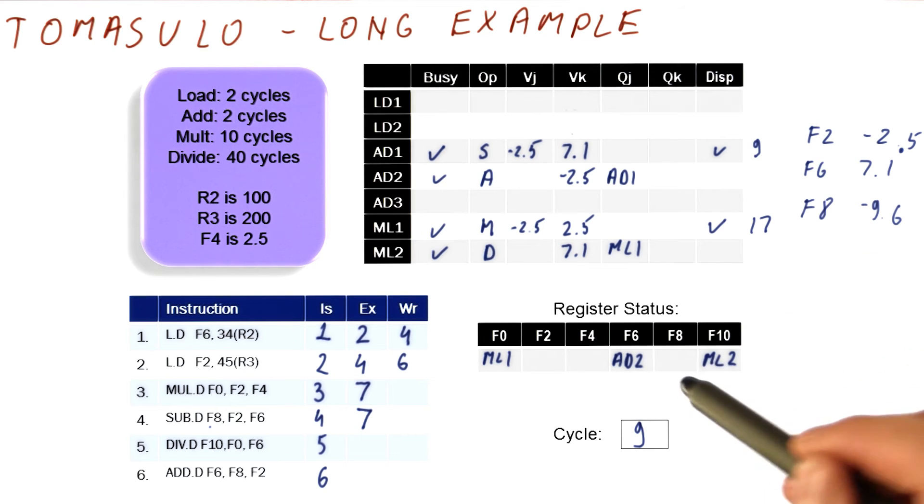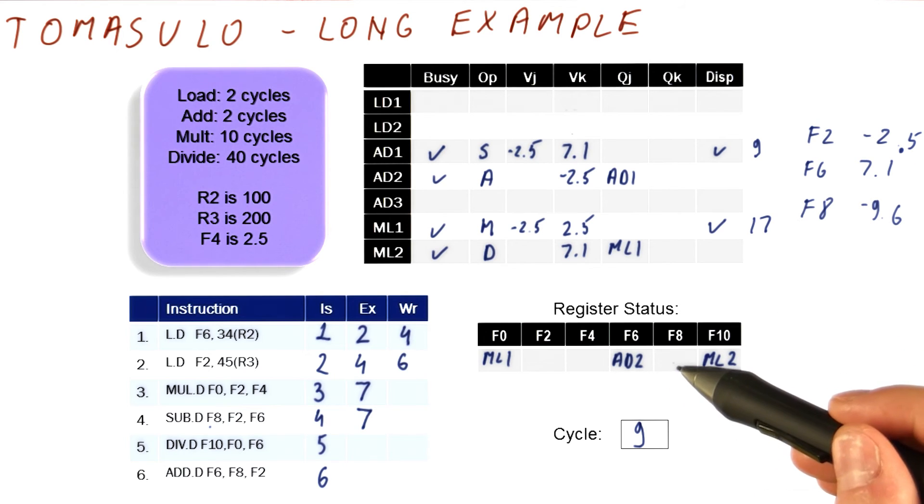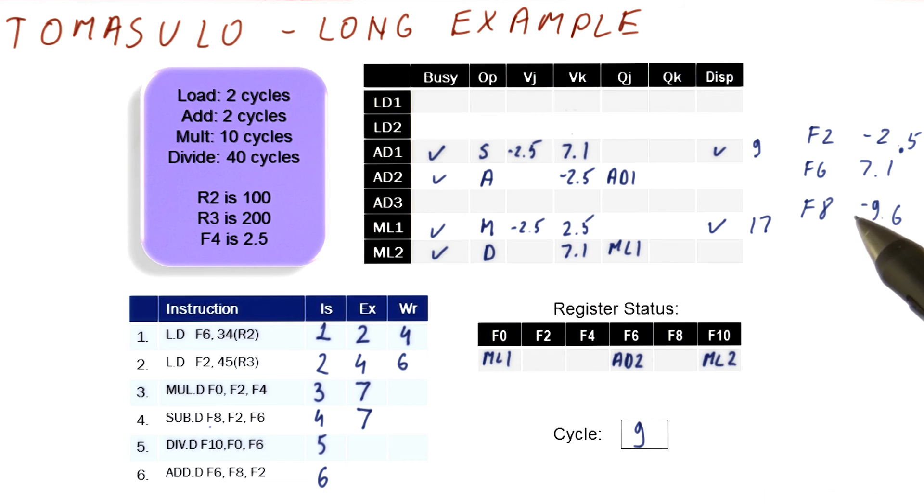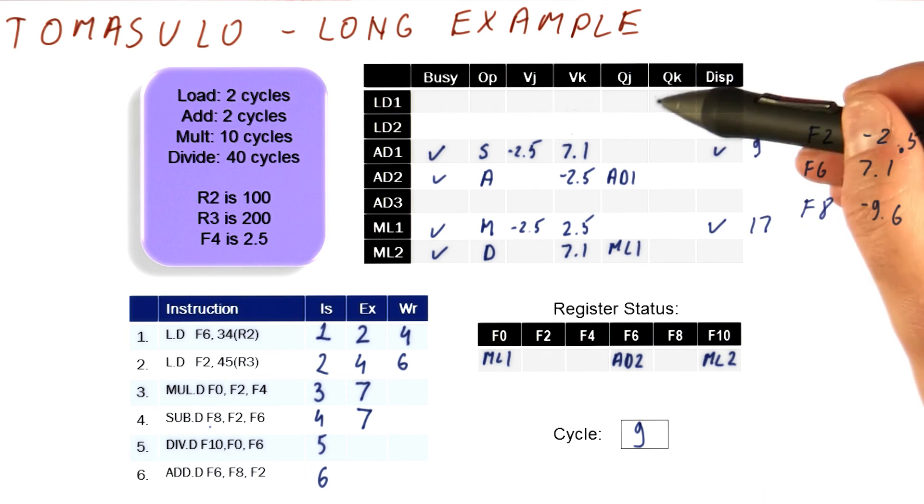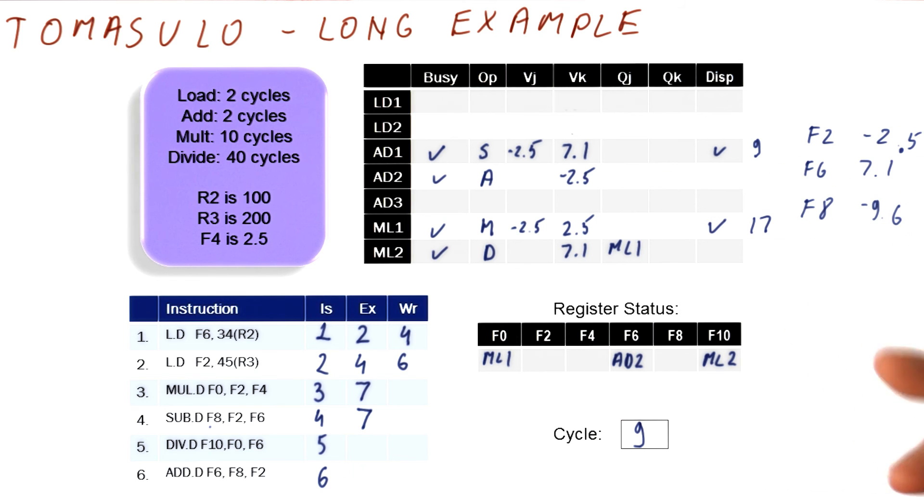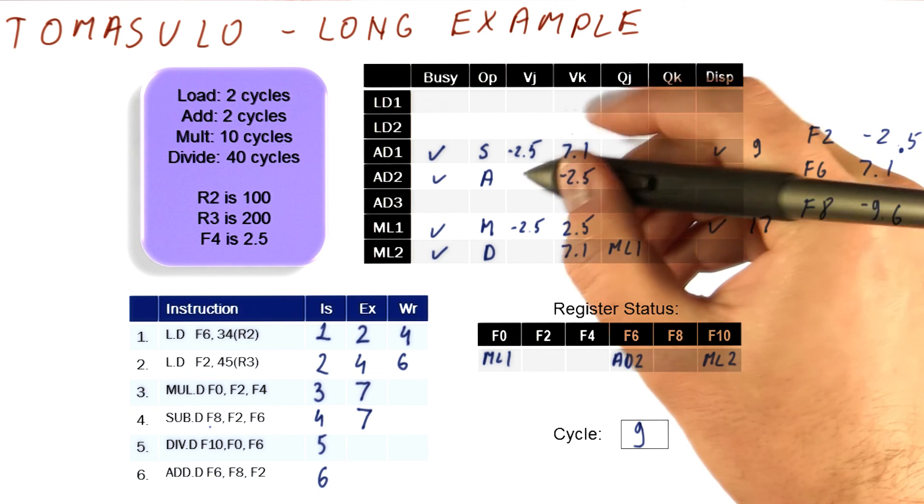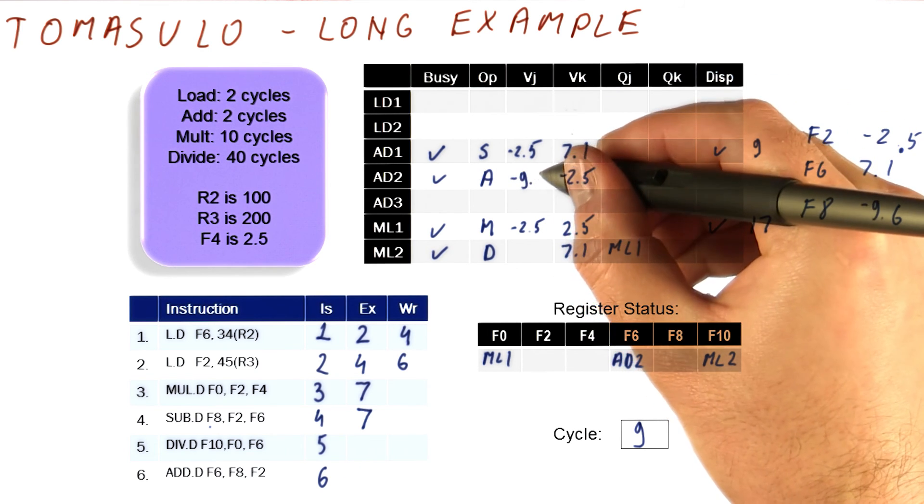We're going to unrename F8 so that it now forces future instructions to read from F8. We're going to find instructions that are waiting for add1, like here, and put minus 9.6 instead of the tag.